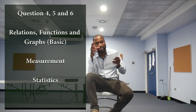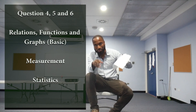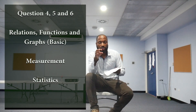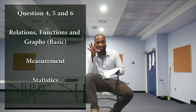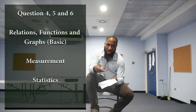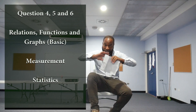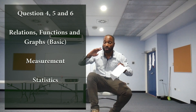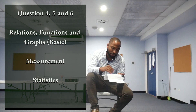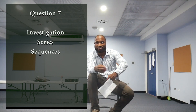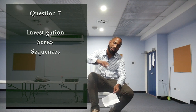Questions four, five, and six don't necessarily need to be in this order — the order can change. Question four looks like it's going to be functions, relations, and graphs: things like drawing a graph of a line, inequalities, and interpreting graphs. Question five is statistics, covering cumulative frequency, frequency polygons, and that kind of content. Question six is measurement. Question seven is always going to be the investigation question — pattern recognition for series and sequences — and those require some practice.